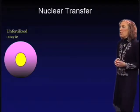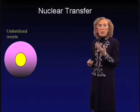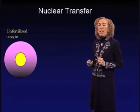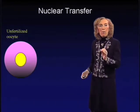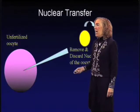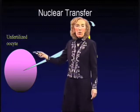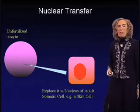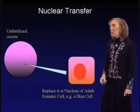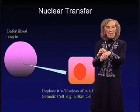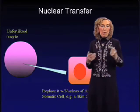Let me describe the process of nuclear transfer. We start with an unfertilized oocyte — my laboratory does this type of technology, working on mice. We remove and discard the nucleus of this oocyte, so it effectively has no genetic information. We then give it some genetic information by replacing it with the nucleus of an adult somatic cell. We could take a small piece of skin, pull out the nucleus from that cell, and implant it into the unfertilized oocyte.